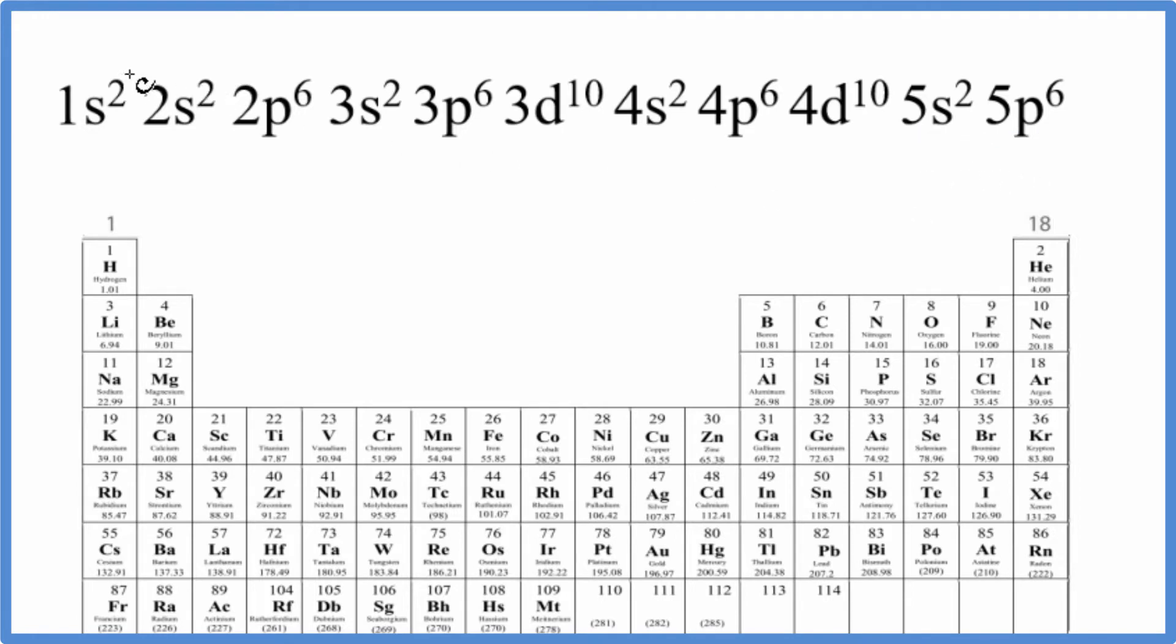The first way to do it is we could just count up all the electrons. These are the electrons here. If we do that, we count up all of these, we'll end up with a total of 54.